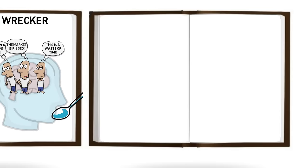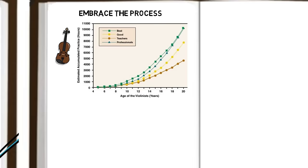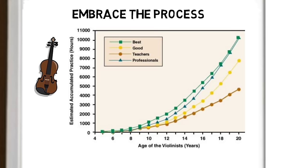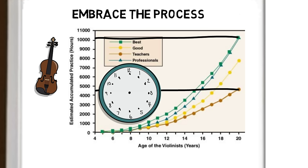Mark drives home the importance of embracing the trading process and points to a study of violinists by a team of psychologists in Berlin. They found that there was a direct correlation between the number of hours practiced and the level of ability. Notice here how the professionals and best performers accrued 10,000 hours by the age of 20, down to teachers at around 4,500 hours. Mark suggests that to become a great trader, you need to put the hours in, specifically aiming at the constant learning, refining and examination of the process.